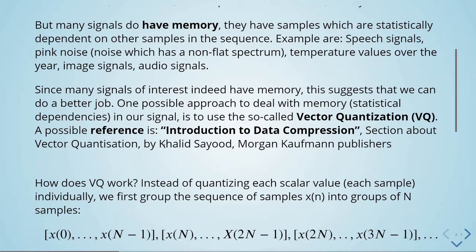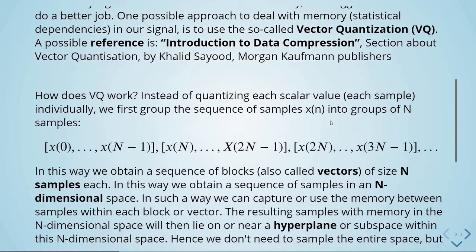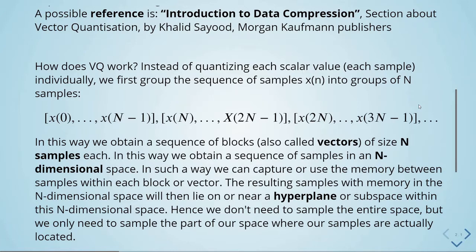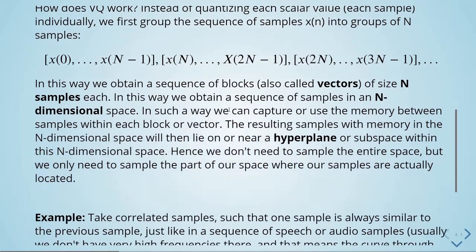One approach to deal with memory and statistical dependencies is vector quantization. Instead of quantizing each scalar sample individually, we group the sequence of samples into groups of N samples, obtaining a sequence of blocks called vectors of size N samples each. This gives us a sequence of samples in an N-dimensional space, allowing us to capture the memory between samples within each block or vector. Samples with memory will lie on or near a hyperplane or subspace within this N-dimensional space, so we only need to sample the part of the space where our samples are actually located.